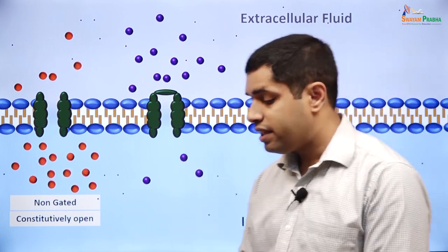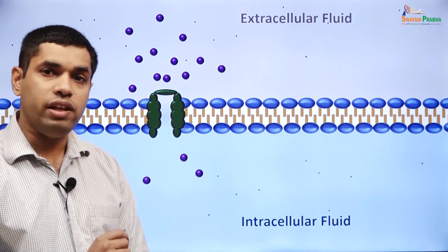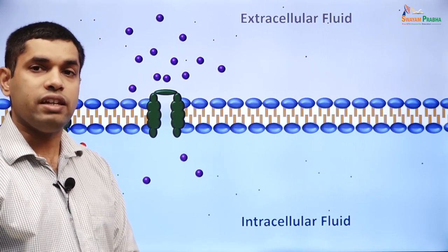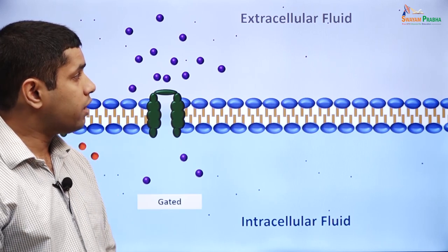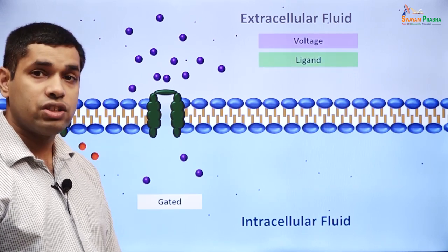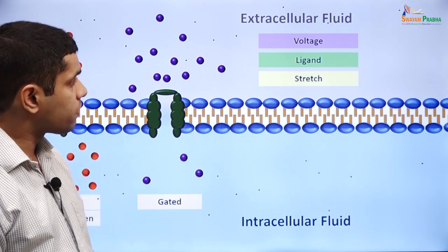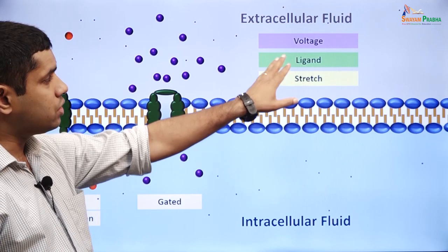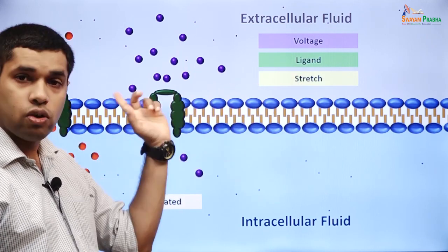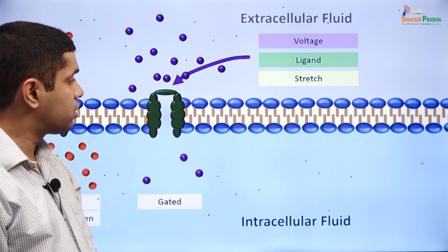On the other hand, gated channels have a gate that regulates ion flow. Depending on what opens or closes the gate, we could have voltage-gated channels, ligand-gated channels, or stretch-activated channels. In each case, voltage, a ligand, or stretch will cause opening or closing of the gate, thereby affecting ion movements through the channel.